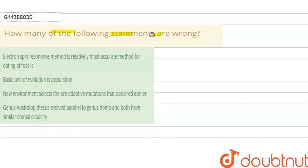many of the following statements are wrong? First one: electron spin resonance method is relatively most accurate method for the dating of fossils. Basic unit of evolution is population. New environment selects the pre-adaptive mutations that occurred earlier. Genus Australopithecus evolved parallel to genus Homo and both have similar cranial capacity. In this question